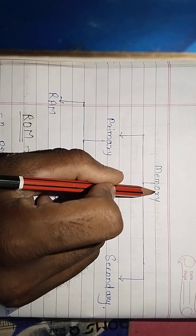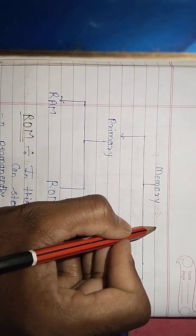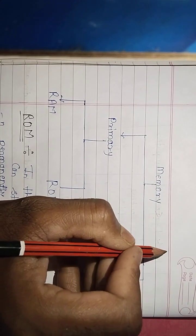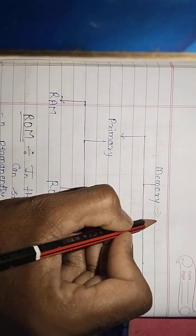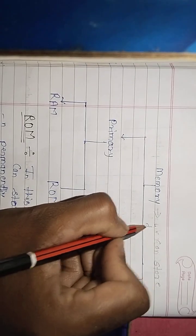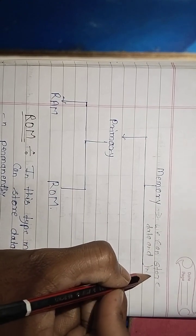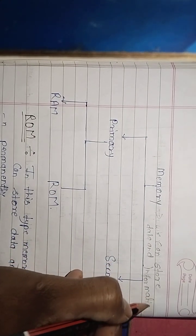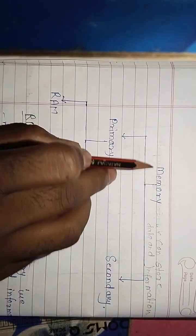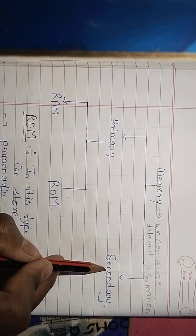First of all, what is memory? Memory is a storage — we can store data and information. There are two types of memory: primary memory and secondary memory.